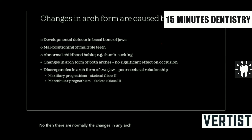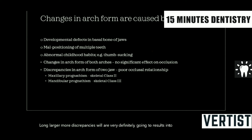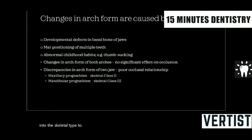Any small discrepancies in the arch size is not going to make the occlusion very abnormal. But larger discrepancies in the arch form of the two jaws will definitely result in poor occlusal relationship. For example, if the maxilla is very large compared to the mandible, it will develop into skeletal Type 2 malocclusion, whereas if the mandible is quite larger, it will develop into skeletal Type 3 malocclusion.